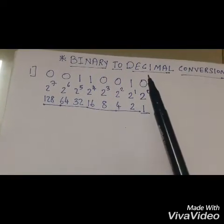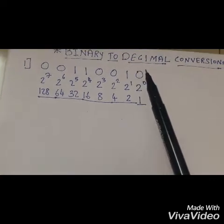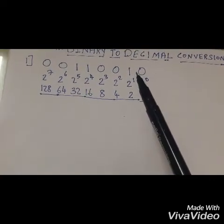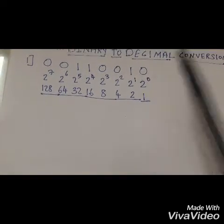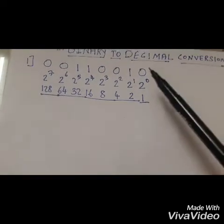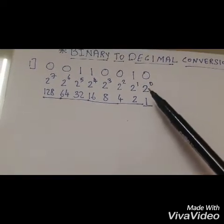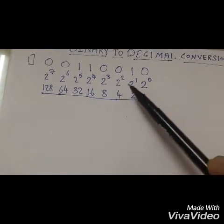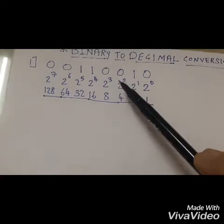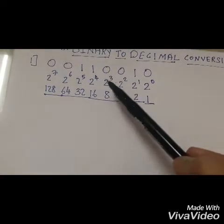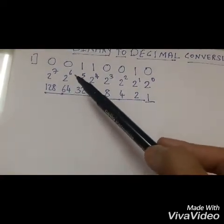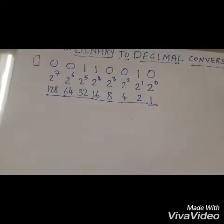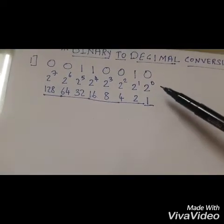As we all know, binary is a two-digit number, and it is a base-2 number as well. What I have done over here is I have written the powers of 2: 2 raised to 0, 2 raised to 1, 2 raised to 2, 2 raised to 3, 2 raised to 4, 2 raised to 5, 2 raised to 6, and 2 raised to 7.